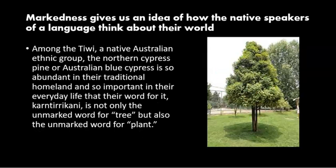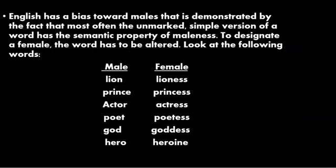Markedness gives us an idea of how native speakers of a language think about the world. Among the Tiwi, a native Australian ethnic group, the northern cypress pine is so abundant in their traditional homeland and so important in everyday life that their word for it is not only the unmarked word for tree but also the unmarked word for plant. English has a bias toward males: the unmarked form of a word typically carries the semantic property of maleness, and to designate the female, the word must be altered — for example, lion/lioness, prince/princess, actor/actress, poet/poetess, god/goddess, hero/heroine.